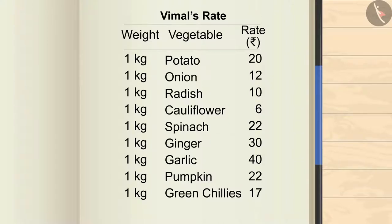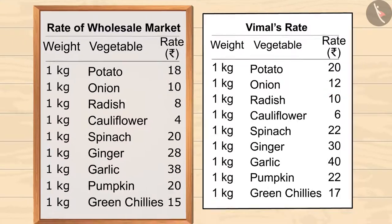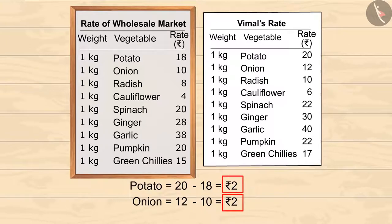Kids, can you tell the difference between the two lists? You can pause the video to find out the difference. For example, look at the prices of potato and onion. Vimal has increased the prices of all the vegetables by 2 rupees.